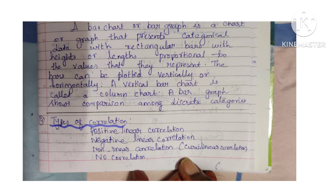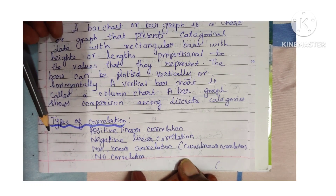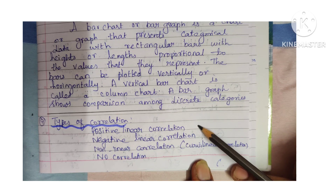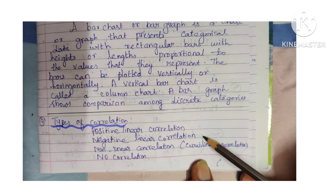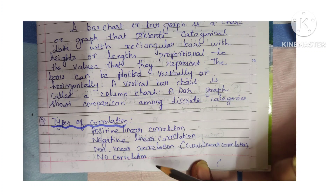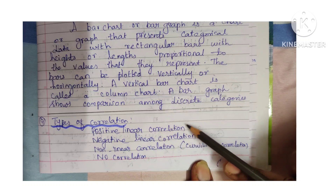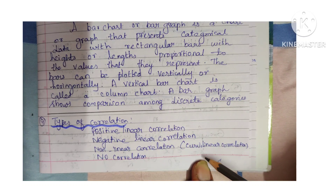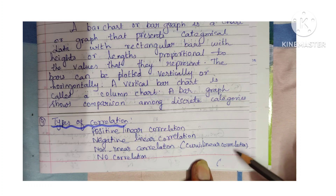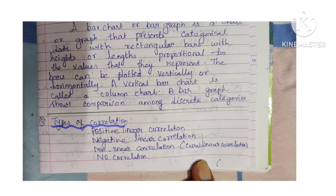Next is types of correlation. You have: positive linear correlation, negative linear correlation, non-linear correlation (otherwise called as curvilinear correlation), and no correlation.